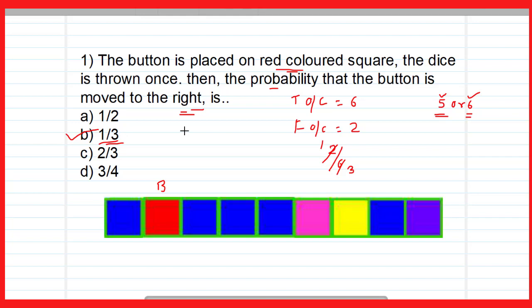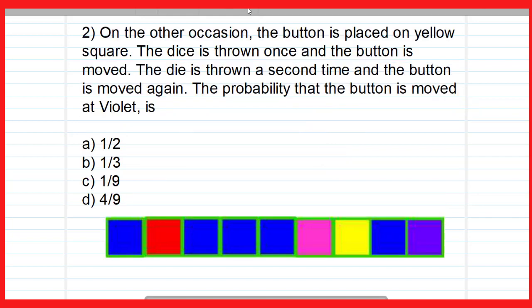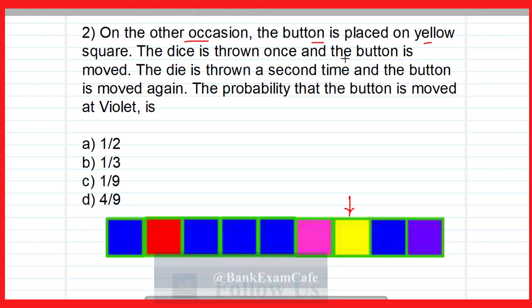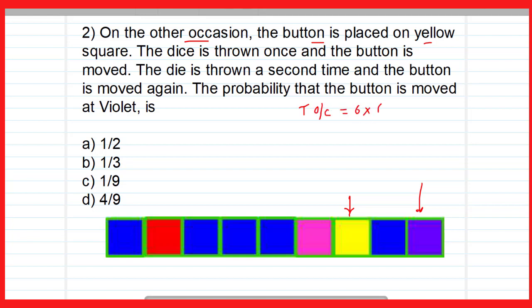Here is the second question of today's case study. On another occasion, the button is placed on the yellow square. The dice is thrown once and the button is moved — we do not know whether it is moved to the right or to the left. Again, the die is thrown a second time and the button is moved again. We do not know whether it is moved to the right or to the left. We have to find the probability that the button is moved to the violet square. Since the dice is thrown twice, the total outcome will be 6 × 6 = 36.